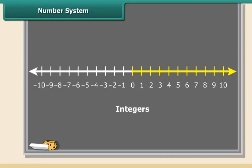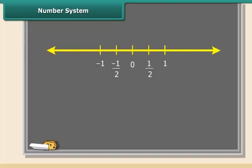Students, what about one by two? Is it a whole number, natural number, or an integer? You can see one by two lies between zero and one. We call it a rational number.